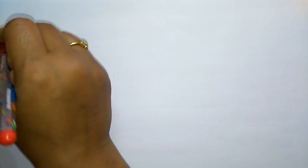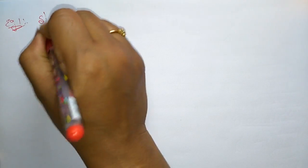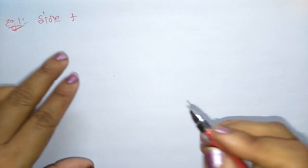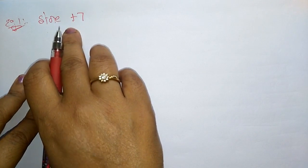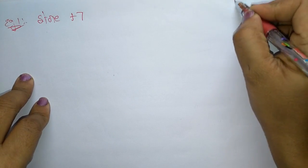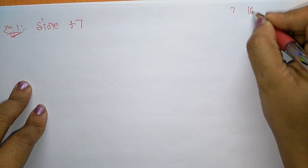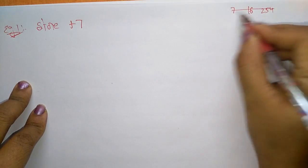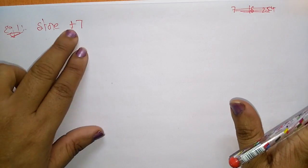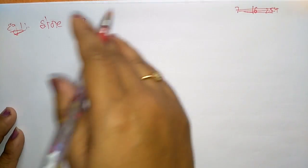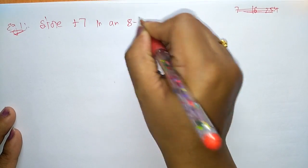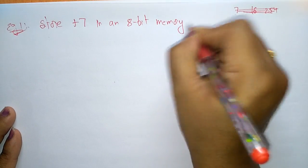Now let us see some examples for sign and magnitude. Whenever a plus or minus sign appears before a decimal number, it is a signed integer. If a number like 7, 16, or 254 has no sign, it is an unsigned integer. Example 1: store +7 in an 8-bit memory location.